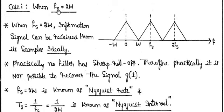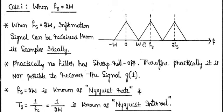The first Nyquist criteria is when the sampling frequency is set equal to two times the highest message signal frequency. For example, if your message signal is 15 hertz and you set the sampling rate to 30 hertz, this is called the ideal sampling condition. In this condition, the spectra touch each other with no frequency gap between them.